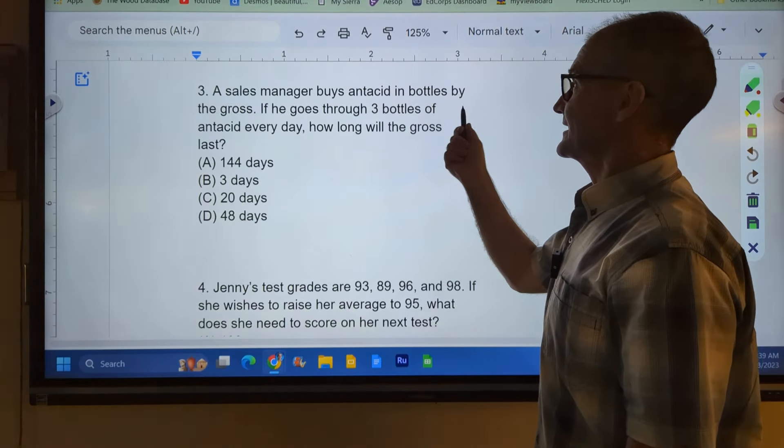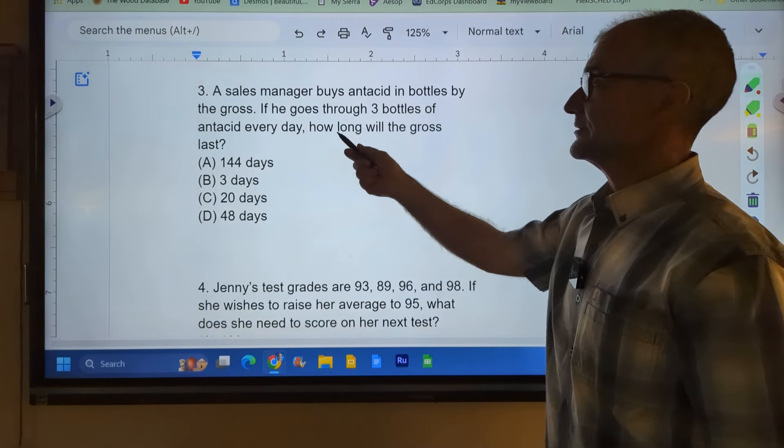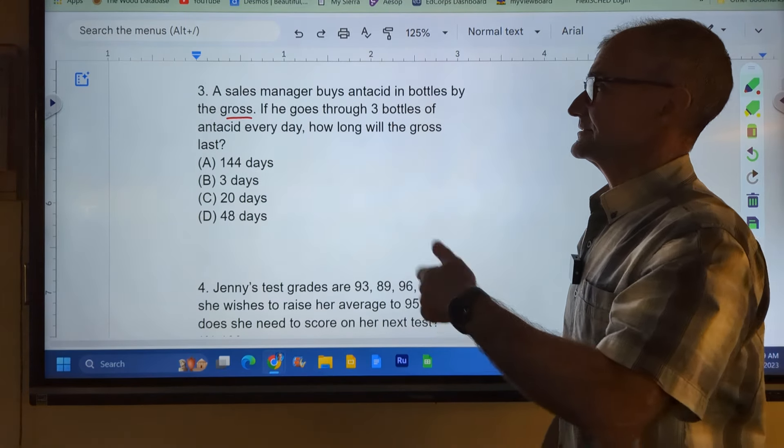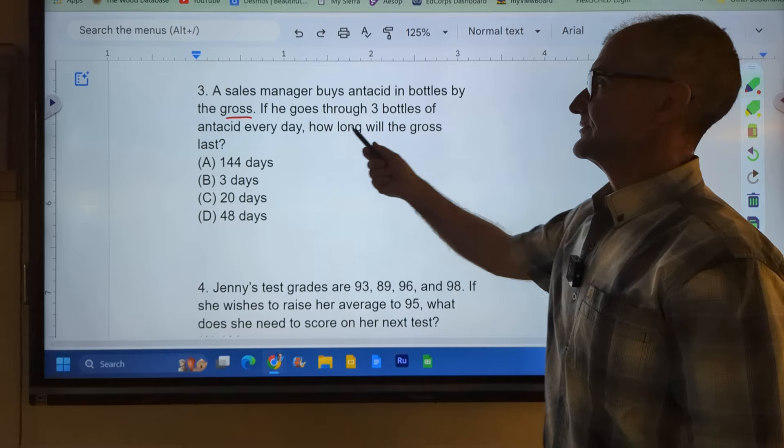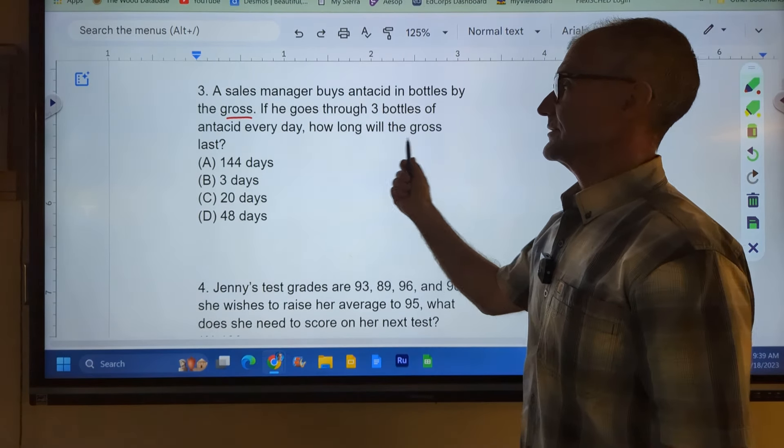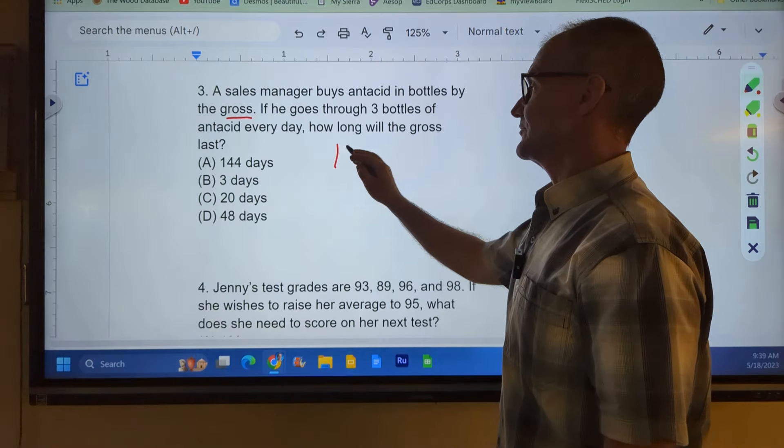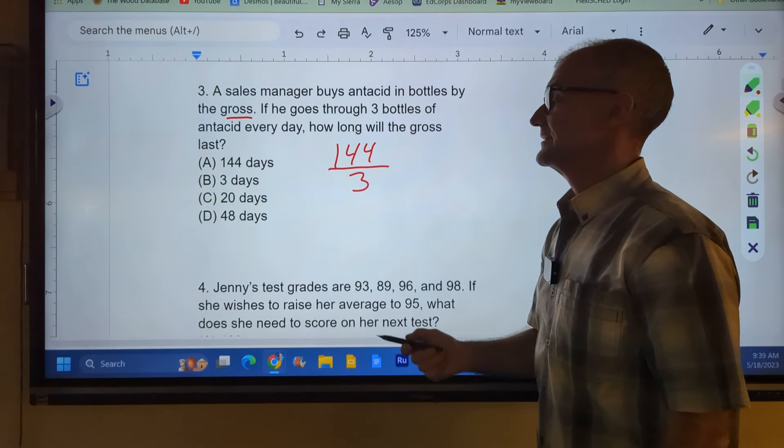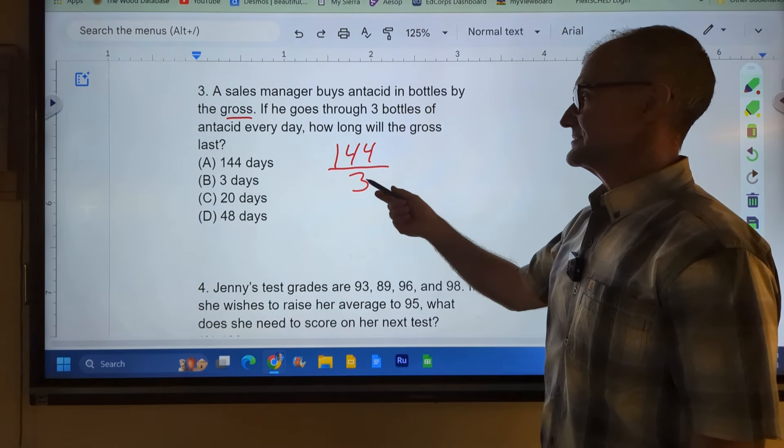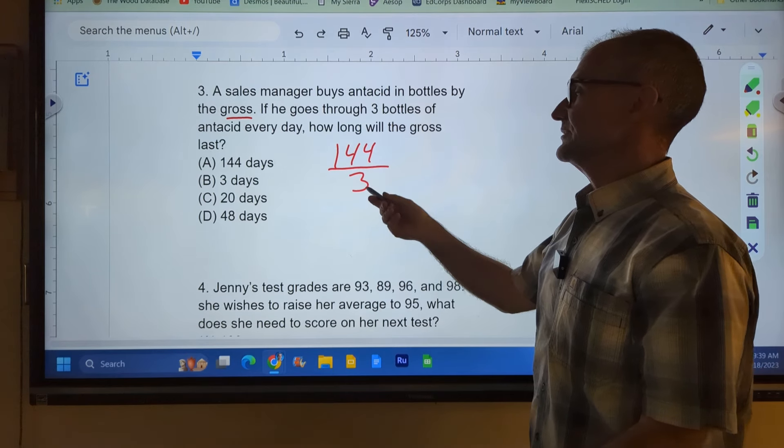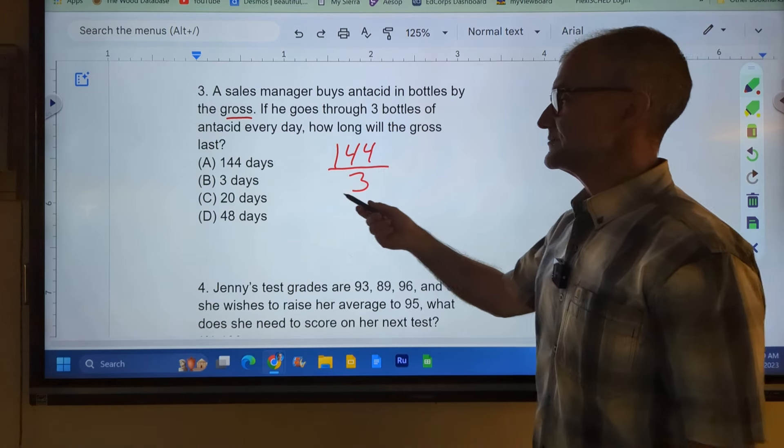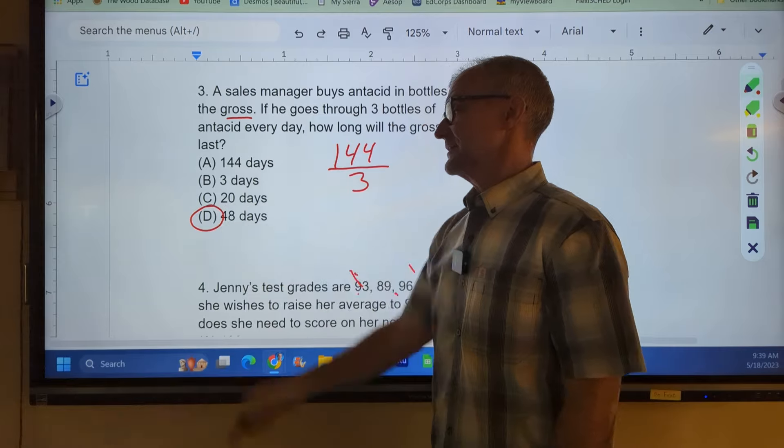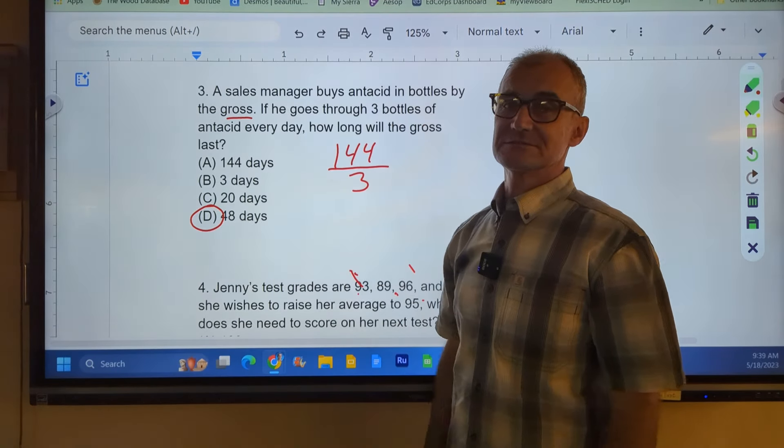Number three, a sales manager buys antacid bottles by the gross. A gross, you need to know that word, a gross is 12 times 12, 12 dozen or a dozen dozen. He goes through three bottles of antacid every day. How long will a gross last? So again, a gross is 144. I have to do 144 divided by 3 because that's what he goes through per day. Again, I could do that long division, or I could just say, well, this is pretty close to 150. Three goes into 150 about 50 times. Is there any of them that are close to 50? Only one of them is close to 50, and it's that one. These don't even make sense. They're not even close at all.